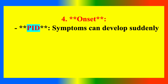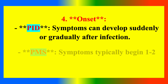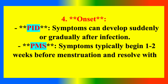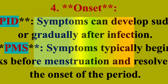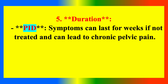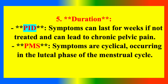Temporal pattern: PID symptoms can develop suddenly or gradually after infection. PMS symptoms typically begin 1 to 2 weeks before menstruation and resolve with the onset of the period. By duration, PID symptoms can last for weeks if not treated and can lead to chronic pelvic pain. PMS symptoms are cyclical, occurring in the luteal phase of the menstrual cycle.